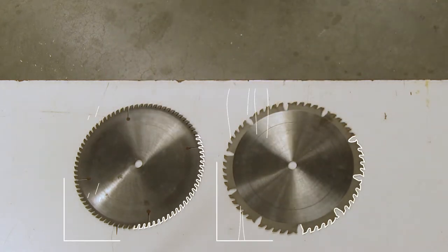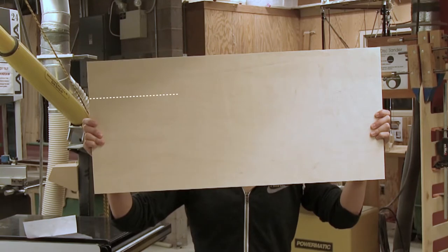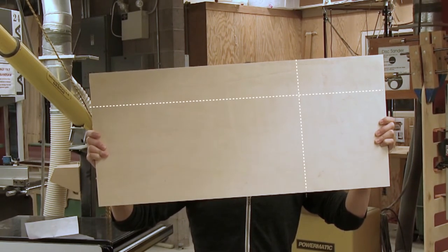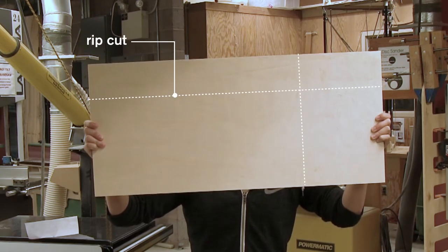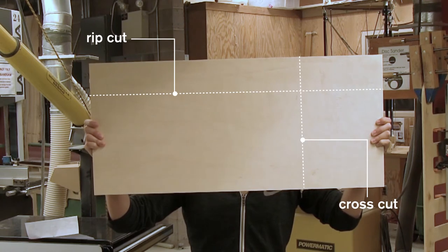Check with the shop monitor to get advice on appropriate blades for cutting your chosen material. The table saw is most often used for straight cuts made parallel or perpendicular to the wood grain. Parallel cutting with the grain is called ripping. Perpendicular cuts across the grain are called cross cuts.